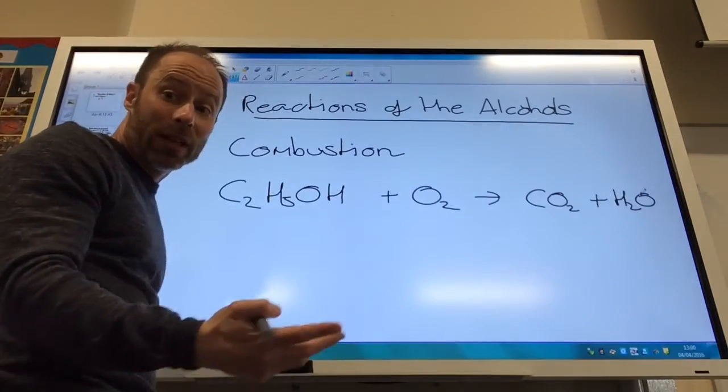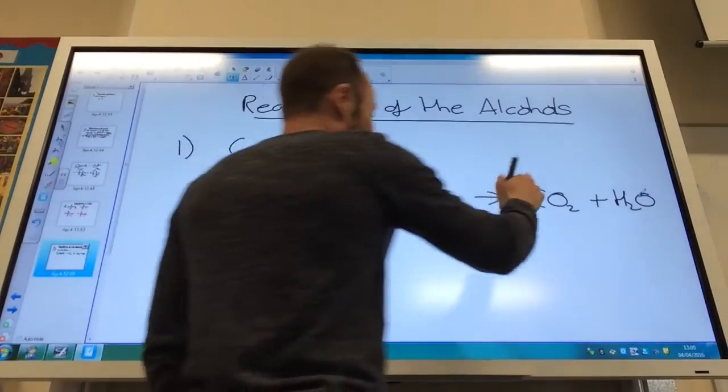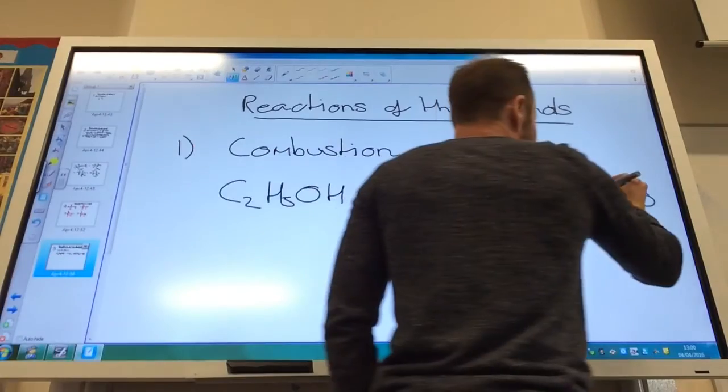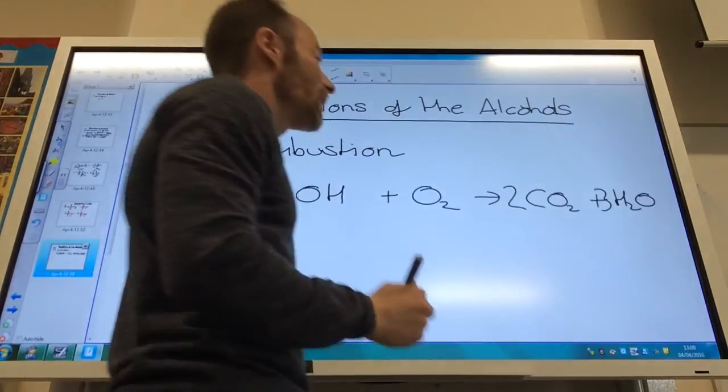It's easy to balance. Don't let it freak you out. Two carbons there, so you've got to make two carbon dioxides. You've got six hydrogens there, so you've got to make three waters.